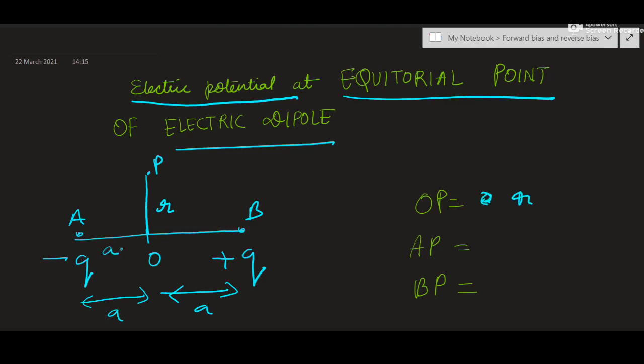Now this was A, so this distance AP will be root of R square plus A square. You can write here AP and you can write BP also similarly.